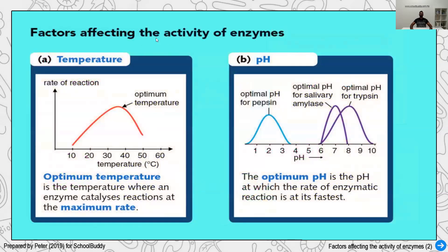There are a few factors that affect enzyme function. The first is temperature. When temperature goes up, the rate of reaction increases. When you reach a certain temperature called the optimum temperature, where the rate is at its maximum, after that it drops down and there is no more reaction. For example, 37 degrees Celsius — in the human body, 37 is the normal temperature and most enzymes work best at the optimum of 37.